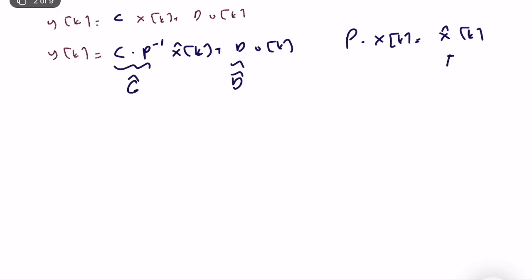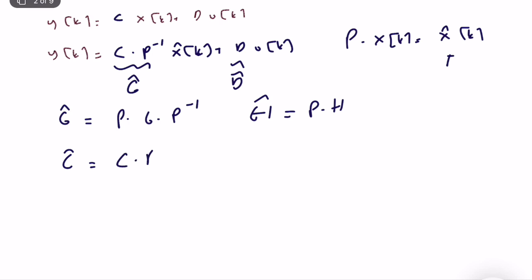With the condition that P·x(k) = x̂(k), the new matrices are: Ĝ = P·G·P⁻¹, Ĥ = P·H, Ĉ = C·P⁻¹, and D̂ = D. This is the similarity transformation — we can transform from any state definition to another.